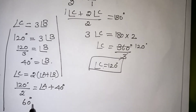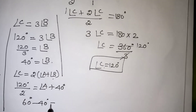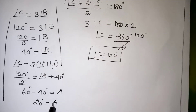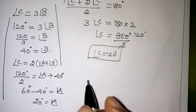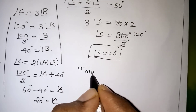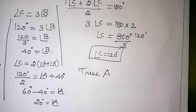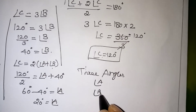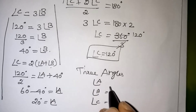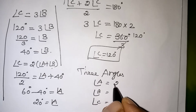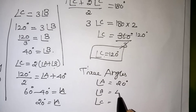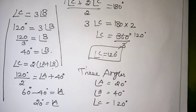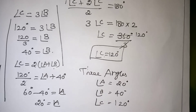Since angle B is 40 degrees, bringing 40 to the other side gives angle A equals 60 minus 40, which is 20 degrees. So the three angles are: angle A equals 20 degrees, angle B equals 40 degrees, and angle C equals 120 degrees. Adding all three: 20 plus 40 plus 120 equals 180 degrees, confirming the answer is correct.